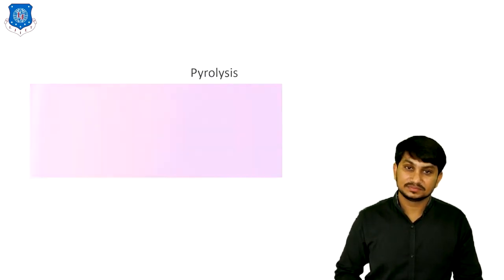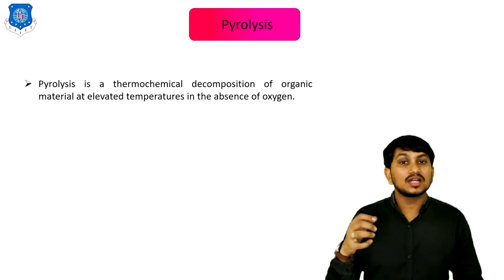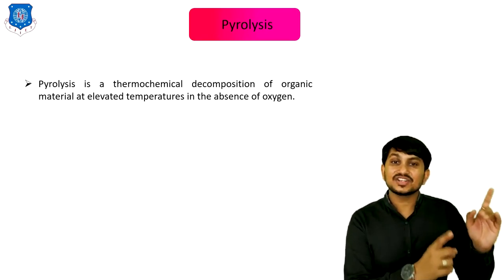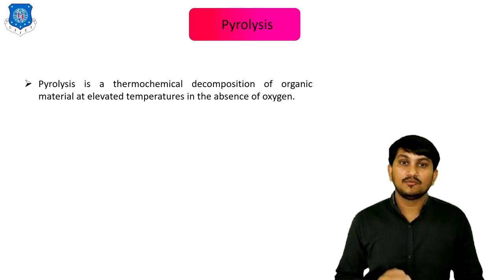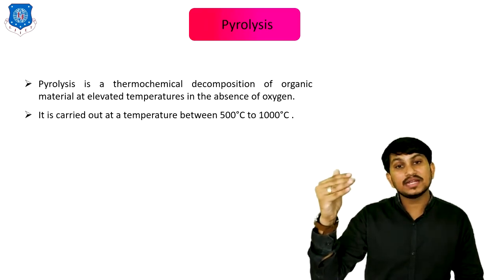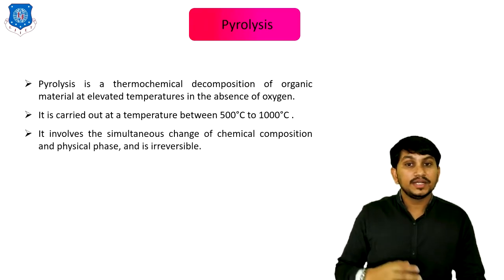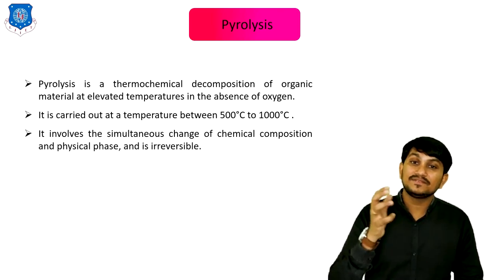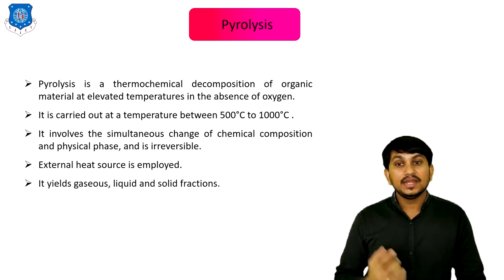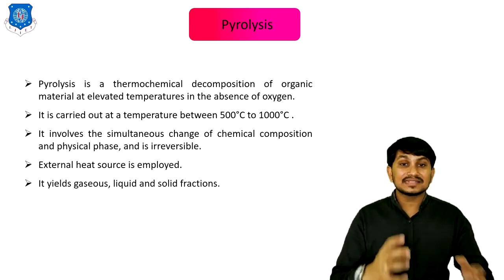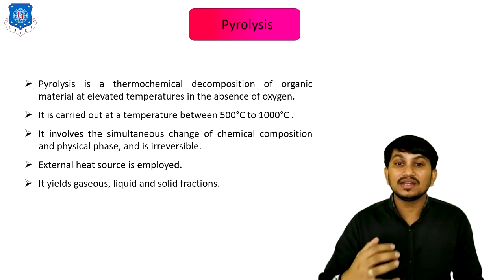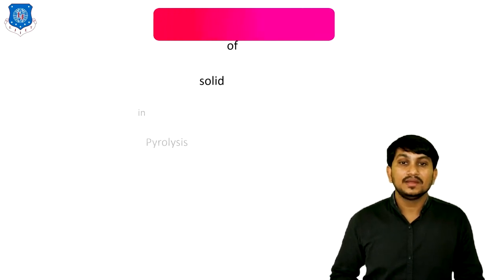The fourth method is pyrolysis. It is a thermochemical decomposition of organic material at elevated temperature in the absence of oxygen — unlike incineration, which is carried out in the presence of oxygen. It is carried out at temperatures between 500°C to 1000°C. It involves simultaneous change of chemical composition and physical phase, and it is irreversible. An external heat source is employed. The main advantage is that all gases, liquids and solids generated by this technique are usable.